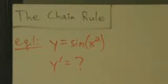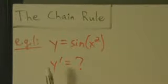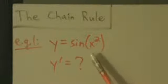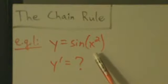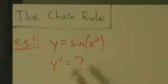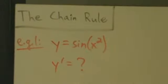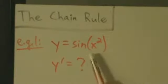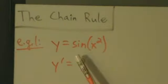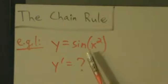Let's go ahead and start doing some examples with the chain rule. Example 1: we have y equals the sine of x squared. We want to know what is y prime — in other words, find the derivative. This is probably one of the simplest examples that you could have with the chain rule application.